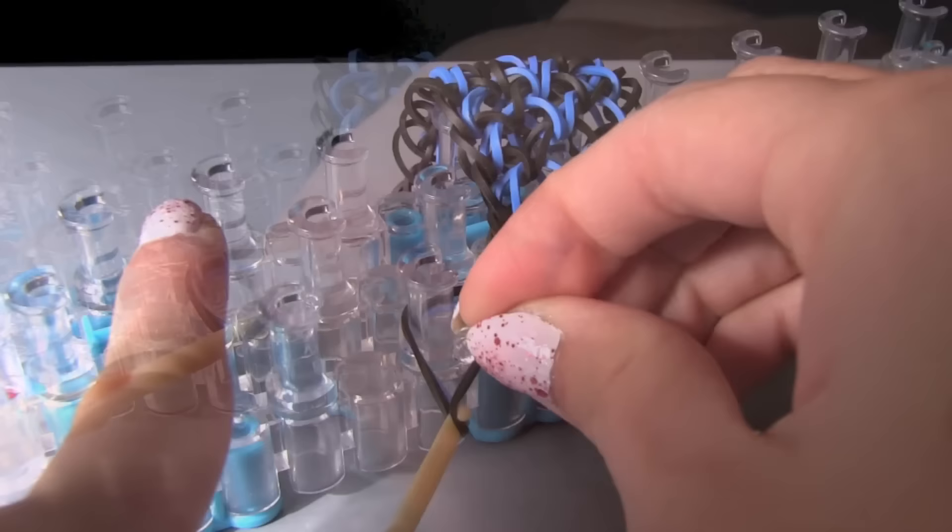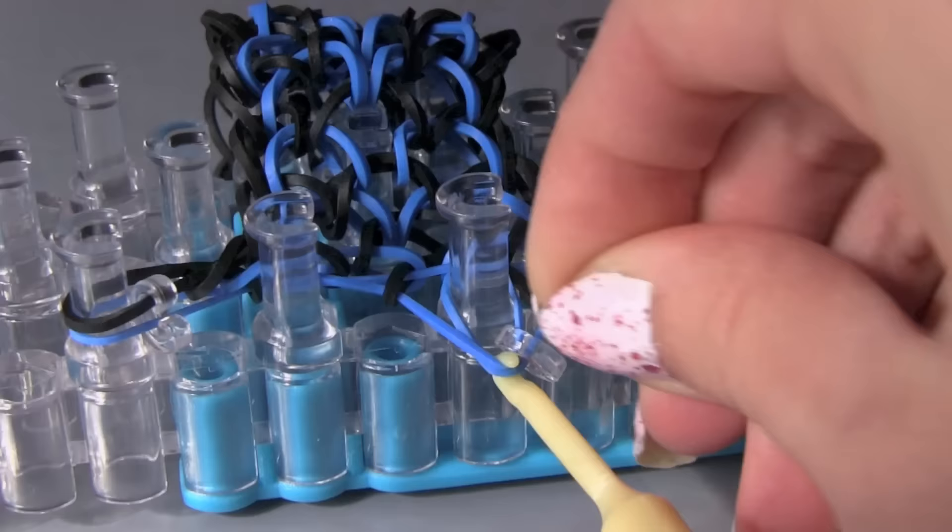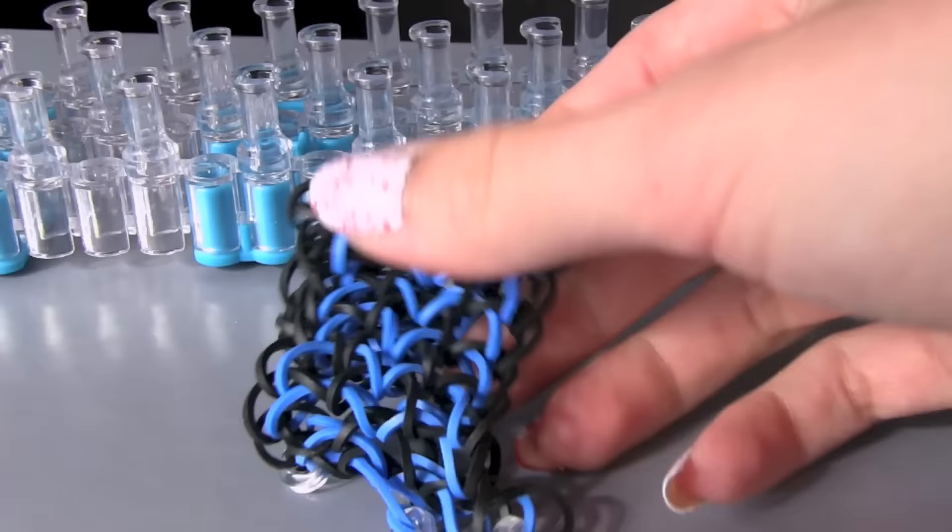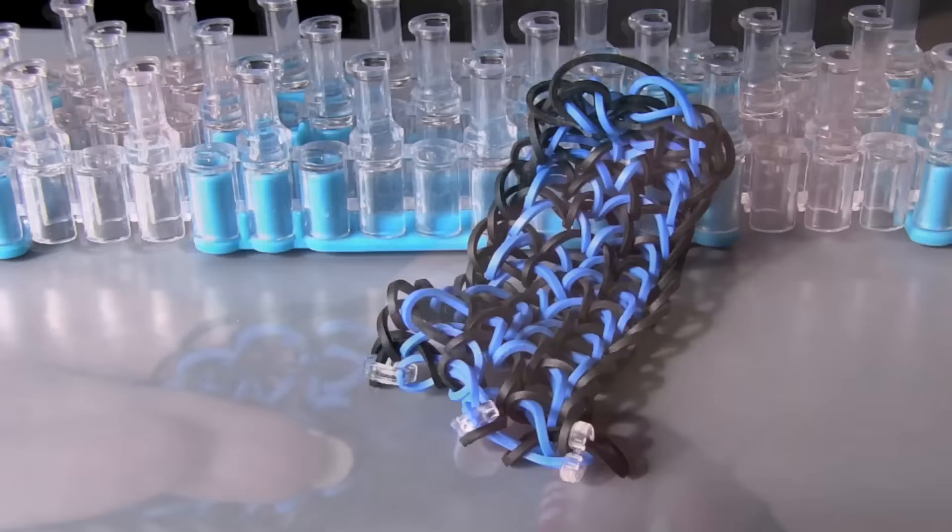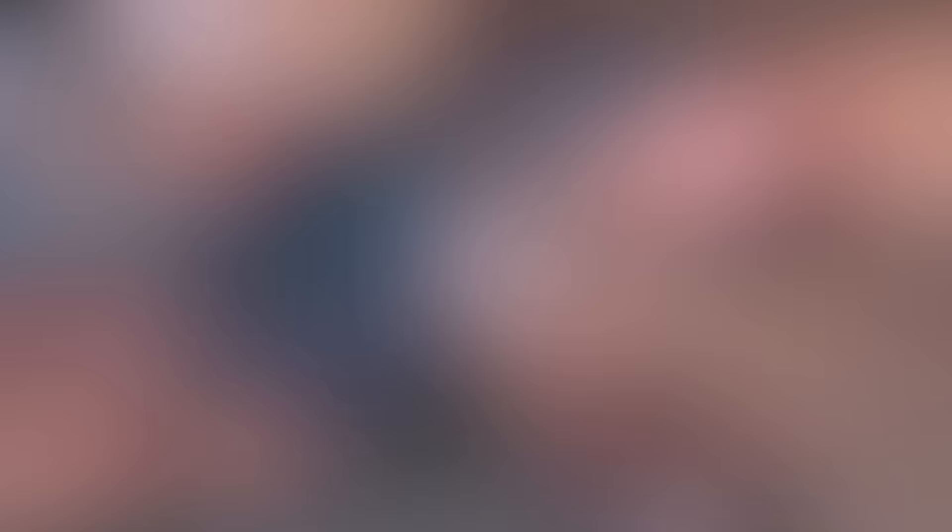You can use your hook to pull your bands out and make it easier to attach your c-clips to the end. So I put on the first one and now I am putting on the second one. And finally the 3rd one. You just want to make sure that everything is attached and nothing is going to fall apart. Now take your piece off of the loom and you are going to attach those 3 c-clips to the other side of the bracelet of course.